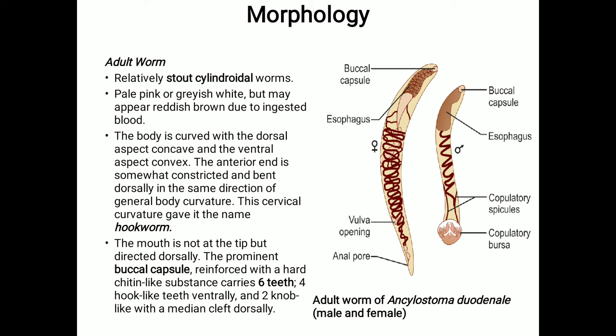The female worm is larger than the male — around 10 to 13 mm long and 0.6 mm thick. Its hind end is conoid with a subterminal anus situated ventrally. The vulva opens ventrally at the junction of the middle and posterior thirds of the body, and the vagina leads to two intricately coiled ovarian tubes occupying the hind and middle parts of the worm. During copulation, the male attaches its copulatory bursa to the vulva, and the copulating pair presents a Y-shaped appearance. The sexes are easily differentiated by size, shape of the posterior end, and position of the genital opening.